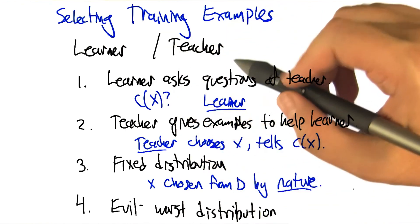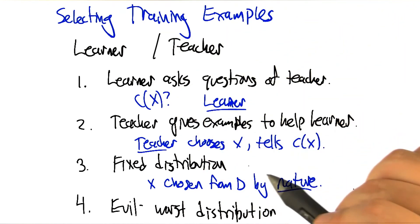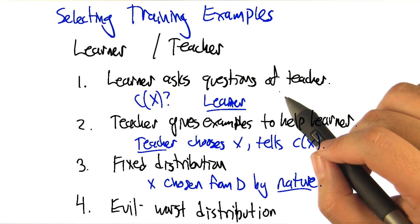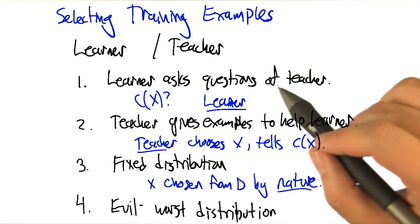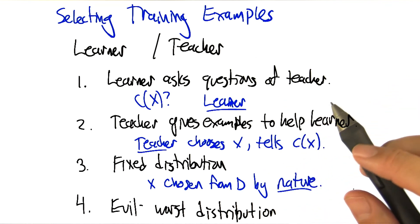All right. So all of these different kinds of distributions or ways of selecting training examples are actually going to come into play in the stuff that we're talking about. Let's use the first couple to get a sense of why these things might be different from each other. So let's go back to this notion of 20 questions.